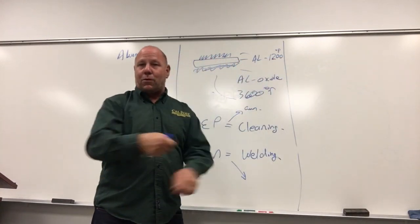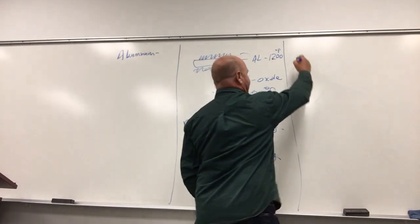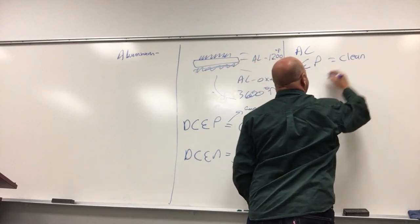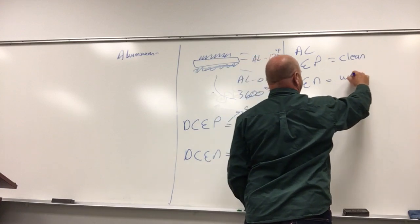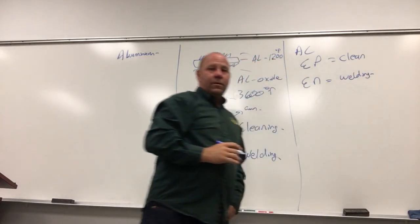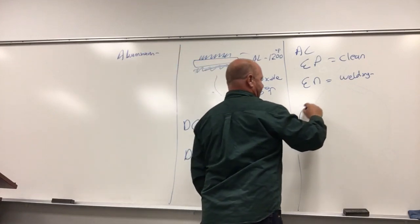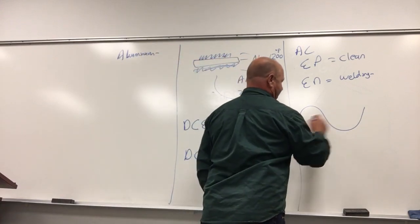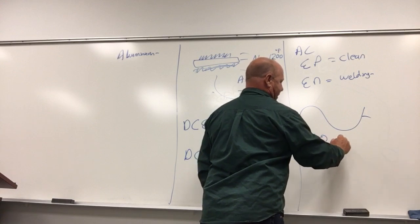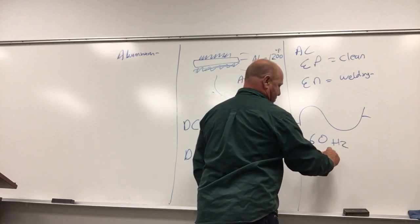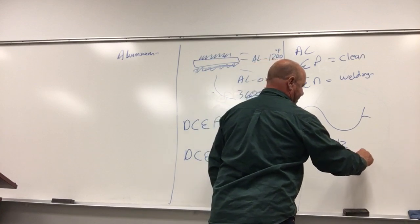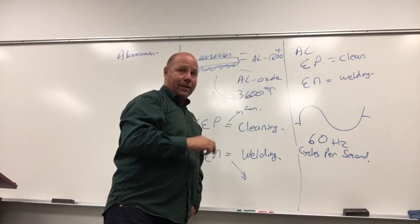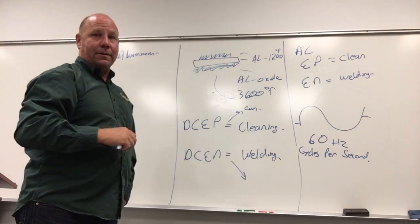Since we're not going to sit there and flip the cords back and forth, we're going to put this machine in AC. And now we'll have electrode positive for cleaning and electrode negative for welding. If you're not familiar with it, the AC sine wave looks like this. It does this sign, a complete wave from here to here, 60 times a second. That's what we call hertz. This is per second, cycles per second, complete cycles, not just half waves. 60 on top, 60 on the bottom.